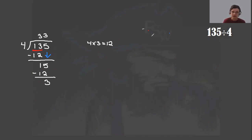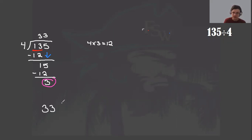Now once you have your remainder, we can write out our final solution. We take the value that we found up here, the 33. Then we make the improper fraction: the remainder is your numerator and your divisor is the denominator. And with that, we have our solution. When we go into long division of polynomials, we'll be using the same approach, just with variables instead of only numbers.